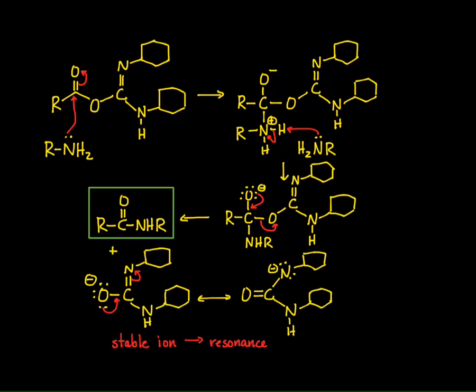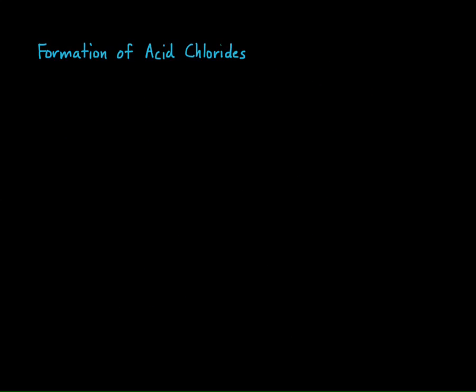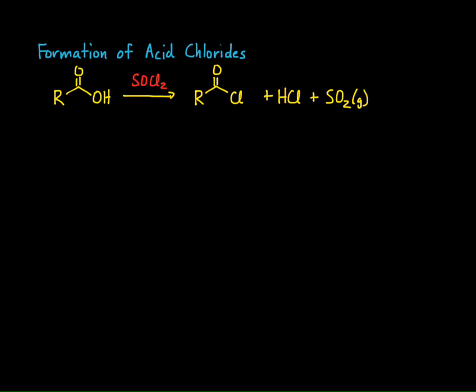So from carboxylic acids we can make esters and amides. We can also make acid chlorides from carboxylic acids — we saw this in Friedel-Crafts acylation — by treating a carboxylic acid with thionyl chloride (SOCl₂) to get acid chlorides plus HCl and SO₂ gas. Let's look at the mechanism. Thionyl chloride has sulfur double-bonded to oxygen, a lone pair on sulfur, and two sulfur-chlorine sigma bonds.